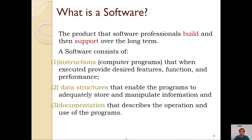So what basically is a software? A software is defined as the product that software professionals build and then support over a long term of time. It generally consists of three parts. The first one is instructions. Instructions are nothing but computer programs which are executed, and when they get executed they give you the results. So whatever features, functions, and performance you expect, that is given to you with the help of a program.